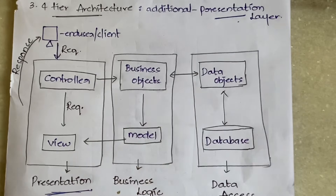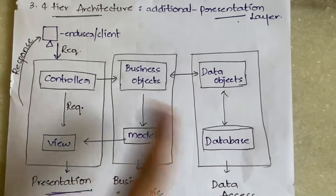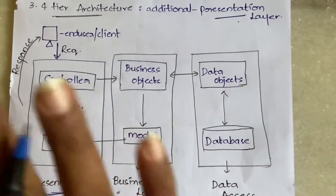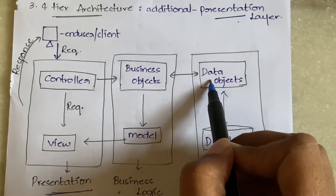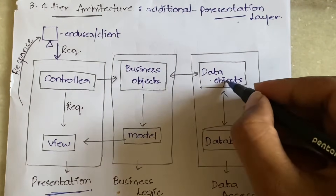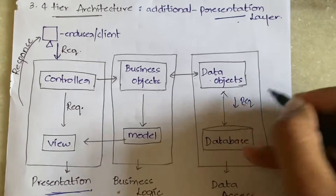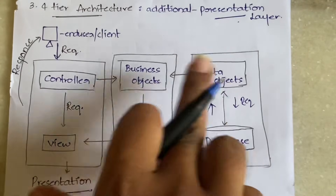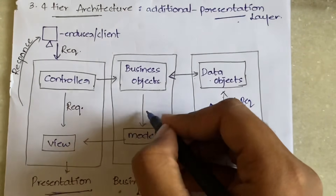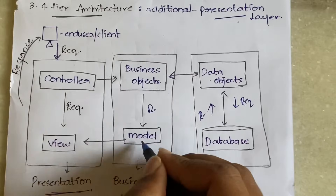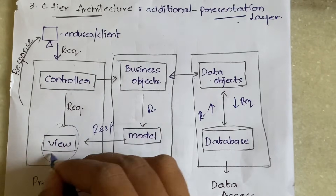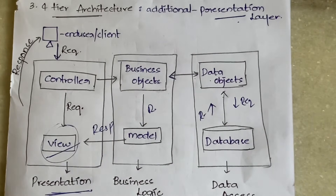The data is accessed from the database. The controller sends the request to the business objects, the business objects send the request to the data objects, and the data objects access the database. The downward arrow is for request and the upward arrow is for response. The database sends information back to data objects, data objects send the response to business objects, and the response is sent to the model. The model sends the response to the view, and the view presents the response to the end user.